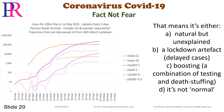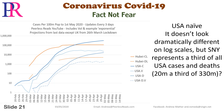That means it's either natural but unexplained, a lockdown artifact, delayed cases, or a boosting combination of death testing and death stuffing. It isn't normal. The USA naive — just accepting the straight figures. It doesn't look dramatically different on log scales, but the state of New York represented a third of all USA cases and deaths.